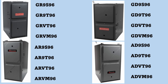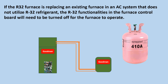All of the new Goodman and Amana R32 gas furnaces, whether from 80% to 97% efficiency, are equipped with a control board capable of shutting off the gas heat and turning on the blower fan in case of an R32 refrigerant leak in the indoor evaporator coil. If the R32 furnace is replacing an existing furnace in an AC system that does not utilize R32 refrigerant, the R32 functionalities in the furnace control board will need to be turned off for the furnace to operate.